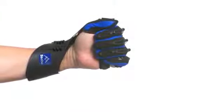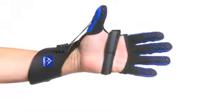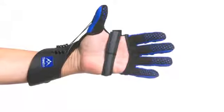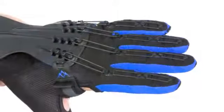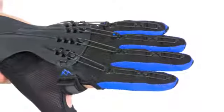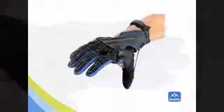The proprietary tension system extends the fingers and thumb following grasping so clients can engage their affected limb for task-specific training. This newfound freedom leads to improved motor recovery and functional independence.